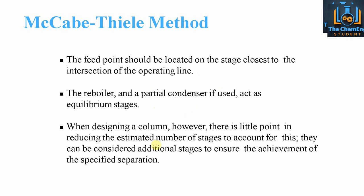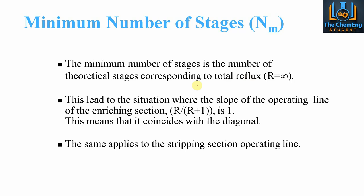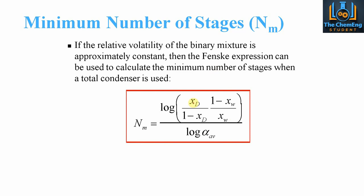The minimum number of stages nm corresponds to total reflux, where r equals infinity. When r equals infinity, the term r over (r plus 1) equals 1, so the operating line coincides with the diagonal. The same applies to the stripping section operating line. If the relative volatility of a binary mixture is approximately constant, we can use the Fenske equation to calculate the number of stages when a total condenser is used.